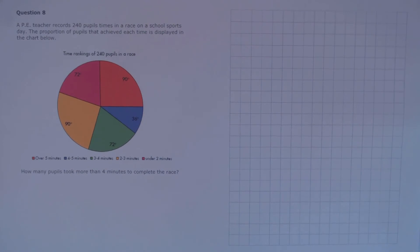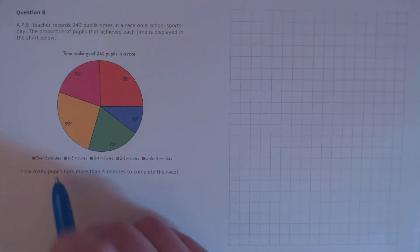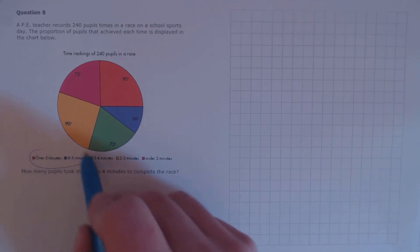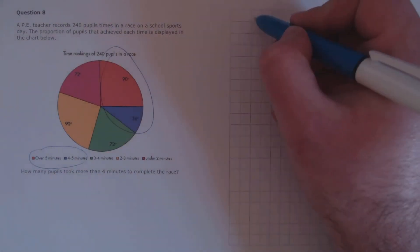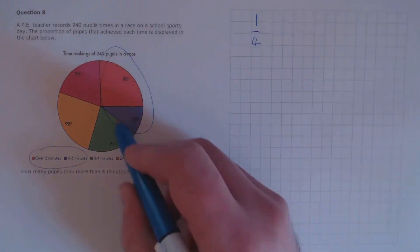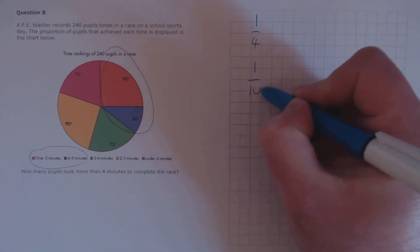Question 8. A PE teacher records 240 pupils' times in a race on a school sports day. The proportion of pupils that achieved each time is displayed in the chart below. How many pupils took more than four minutes to complete the race? We're looking for regions that represent more than four minutes — these two regions. One is 90 degrees, which is a quarter of the circle, and the other is 36 degrees, which is a tenth of the circle, since 360 divided by 36 is 10.